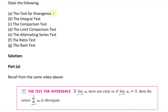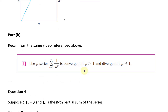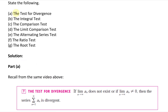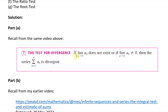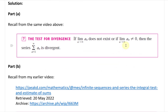Part A is the test for divergence. Recall from the series video: if the limit as n approaches infinity of a_n does not exist, or if the limit of the sequence a_n is not equal to 0, then the series — the summation from n equals 1 to infinity of a_n — is divergent. For example, if the limit equals 3, you'd be summing 3 to infinity, so the terms need to approach 0.